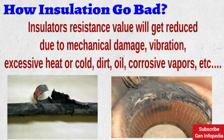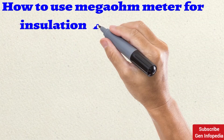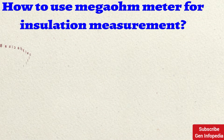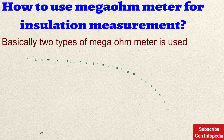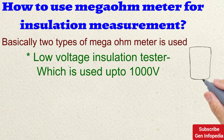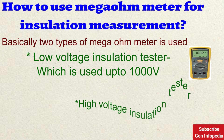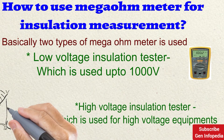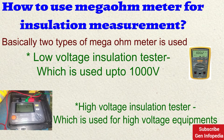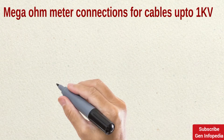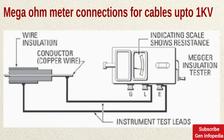Now we will see how to use a megaohmmeter for insulation measurement. Basically two types are used: a low voltage insulation tester used up to 1000 V, and a high voltage insulation tester for high voltage equipment. For cables up to 1 kV, we use only two probes — a line probe and an earth probe. The line probe is directly connected to the cable conductor.